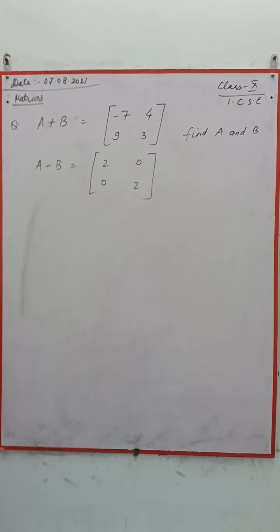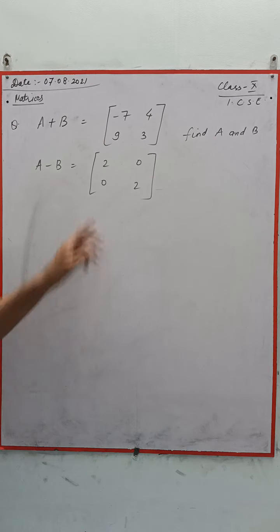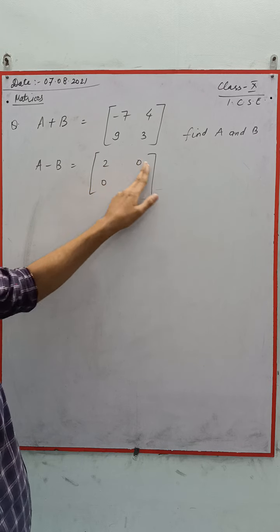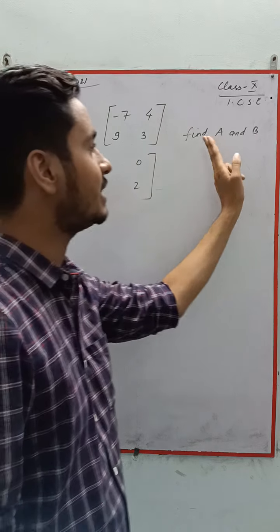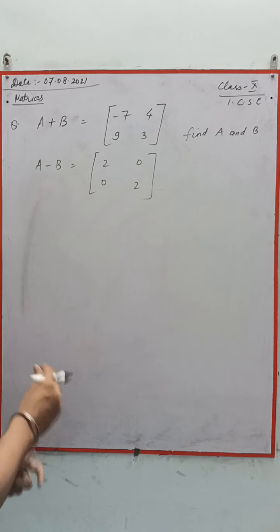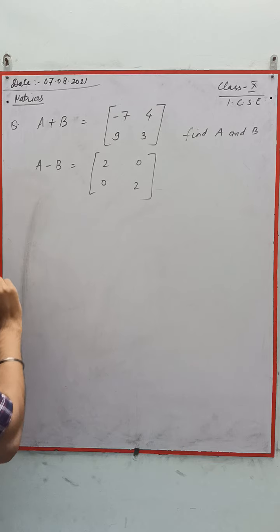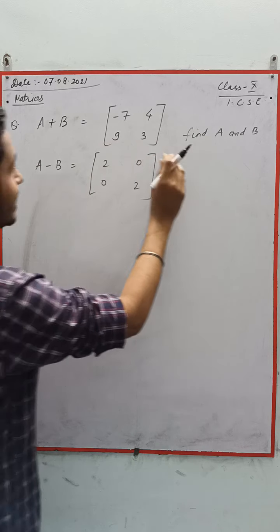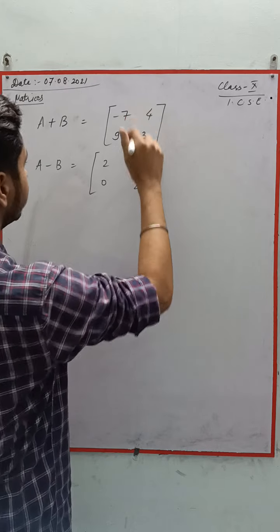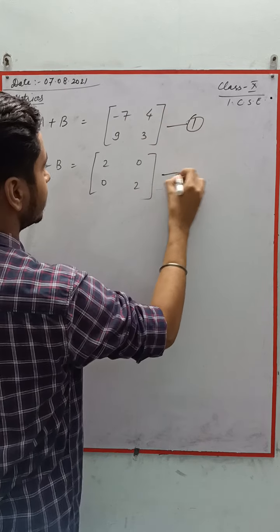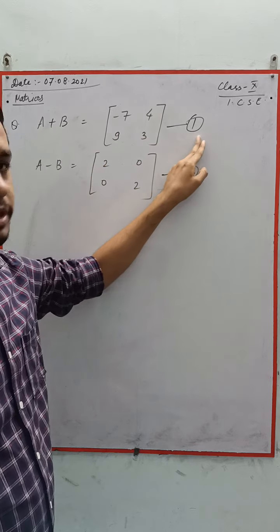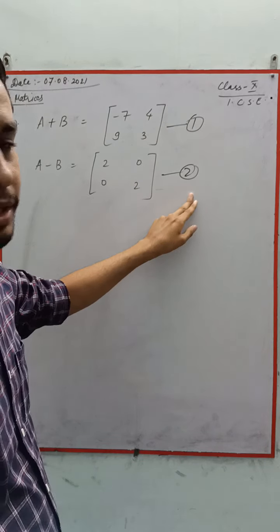It is given that A plus B is equal to the matrix [-7, 4, 9, 3] and A minus B is equal to [2, 0, 0, 2]. We need to find the value of A and B. These two given things can be considered as two equations — the first equation and the second equation.